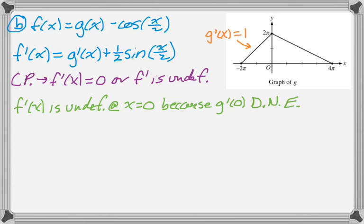So on the interval from negative 2π to 0, g prime is just 1, because it's a line with a slope of 1. And then on 0 to 4π, g prime is just negative 1 half, because it, again, is linear, and you can just find that slope by looking. So we get two different things.